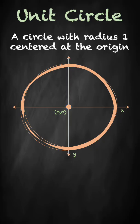A unit circle is a circle with radius 1 centered at the origin, and is often used in trigonometry to calculate the sine, cosine, or tangent of an angle.